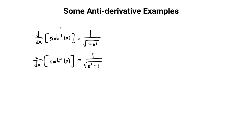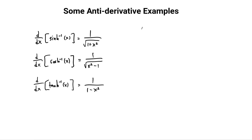You can write this as 1 over x squared plus 1 if you want. The derivative of tanh inverse of x is going to be equal to 1 over 1 minus x squared. That's a really important one, so make sure you can work that one out if you haven't already. These all transfer then into integrals.